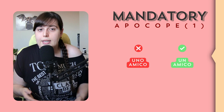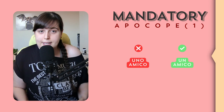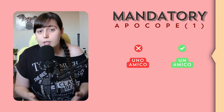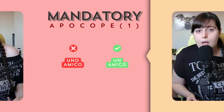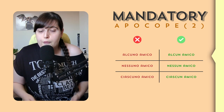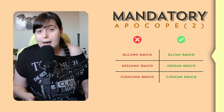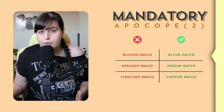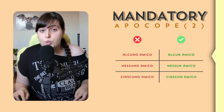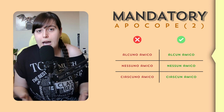Apocope is mandatory in the following cases. First, with the indefinite article 'uno' (masculine). For example, we don't say 'uno amico' but 'un amico' (a friend). Similarly with the indefinites 'alcuno', 'nessuno', and 'ciascuno': not 'alcuno amico' but 'alcun amico' (no friend); not 'nessuno amico' but 'nessun amico'; not 'ciascuno amico' but 'ciascun amico' (each friend).